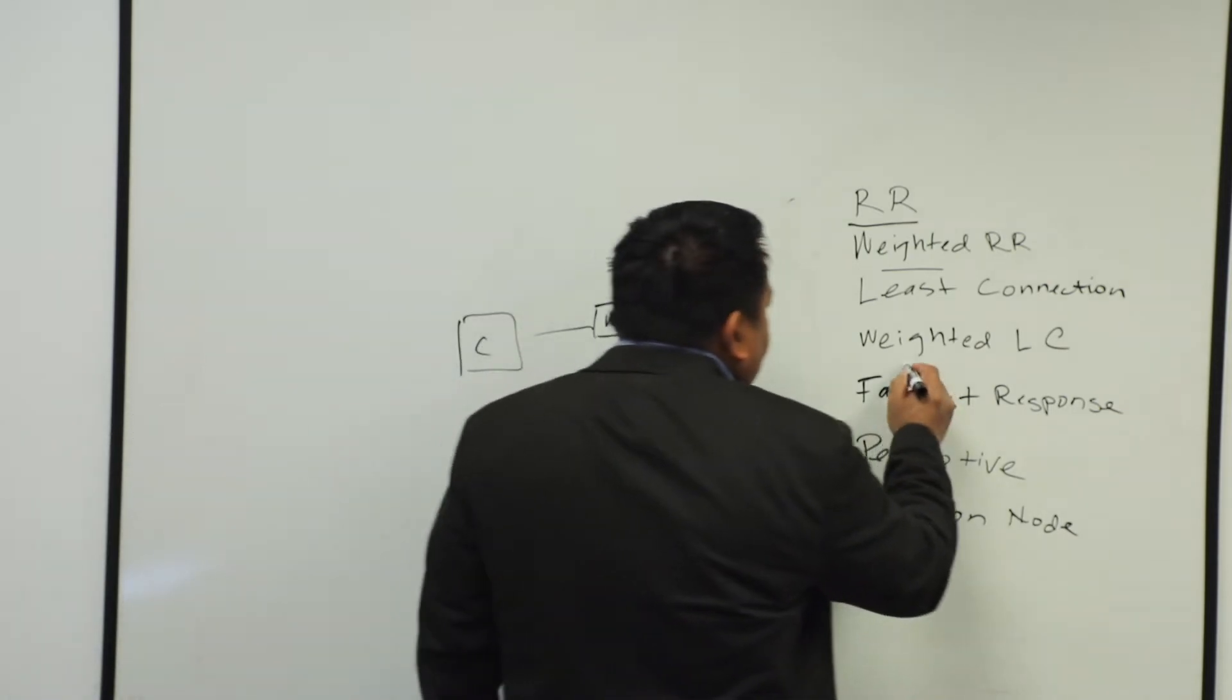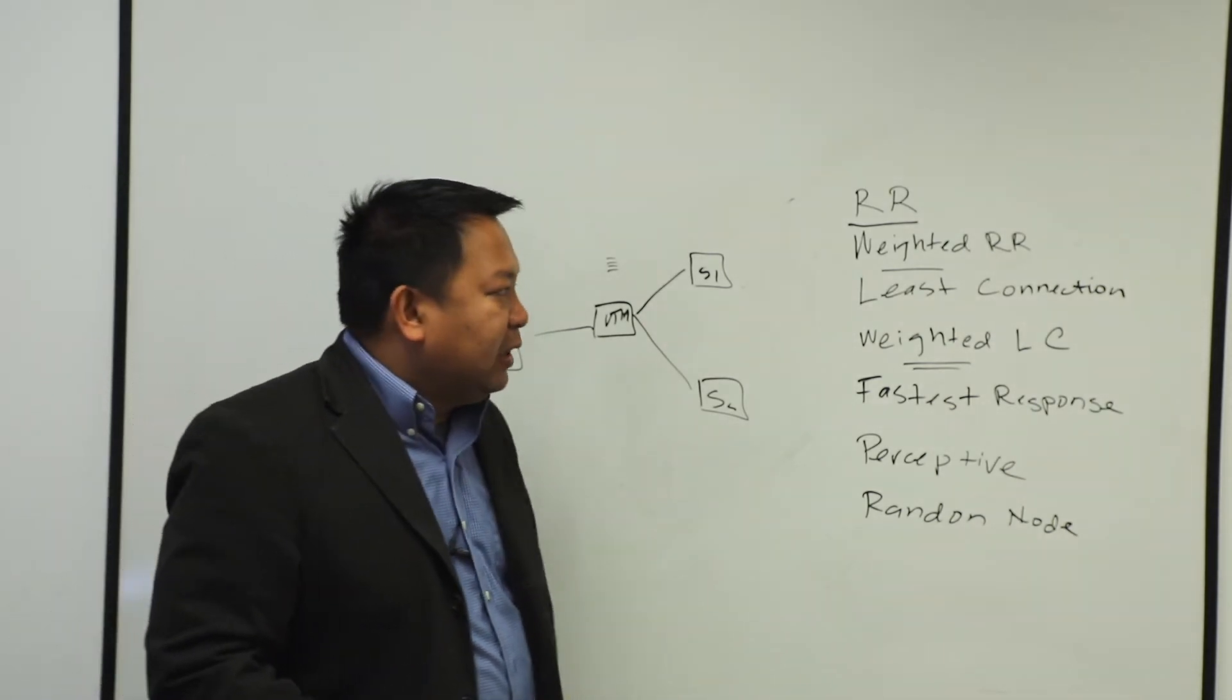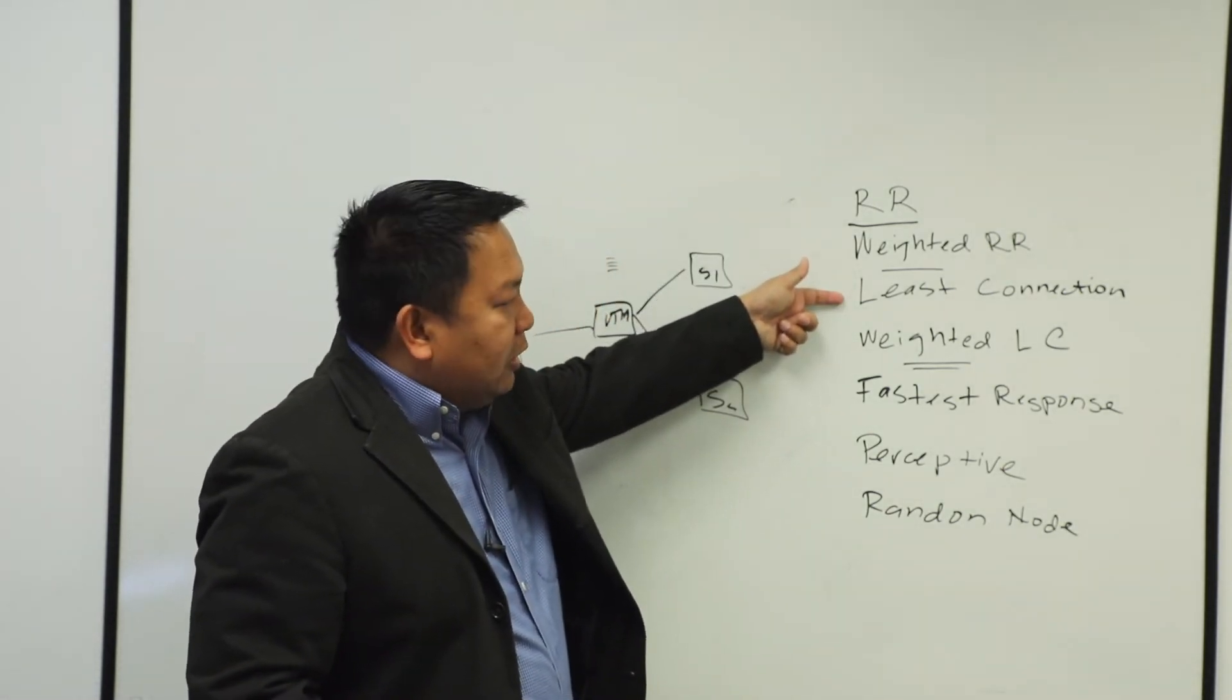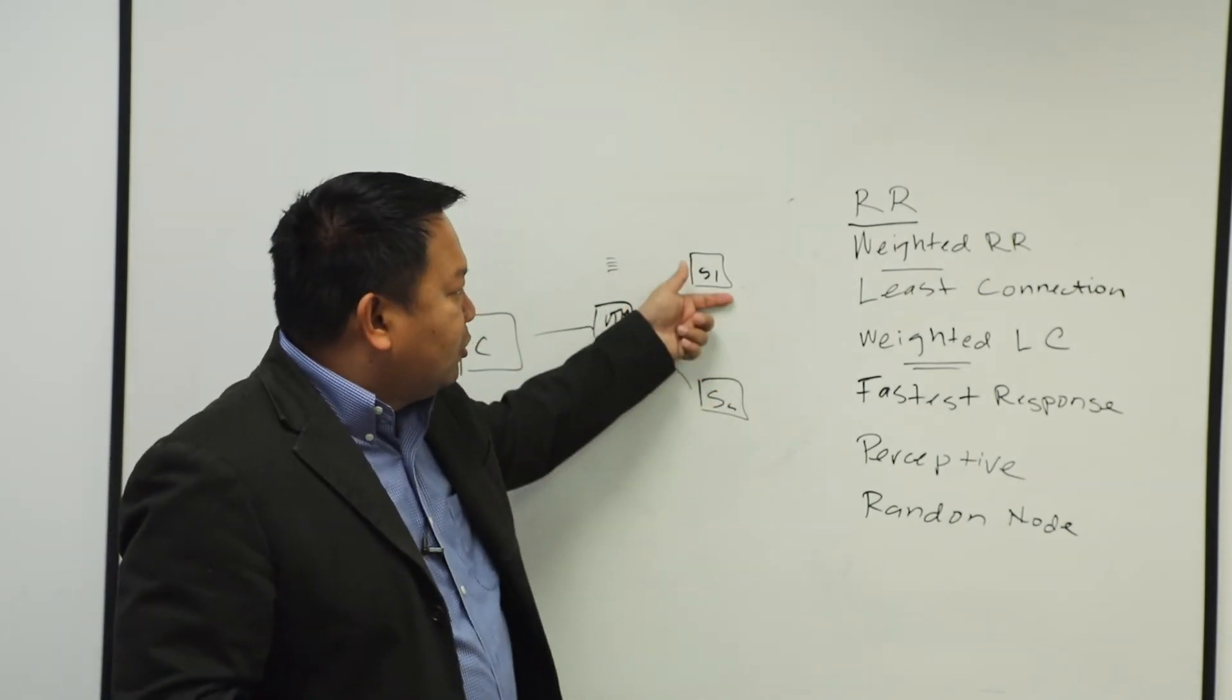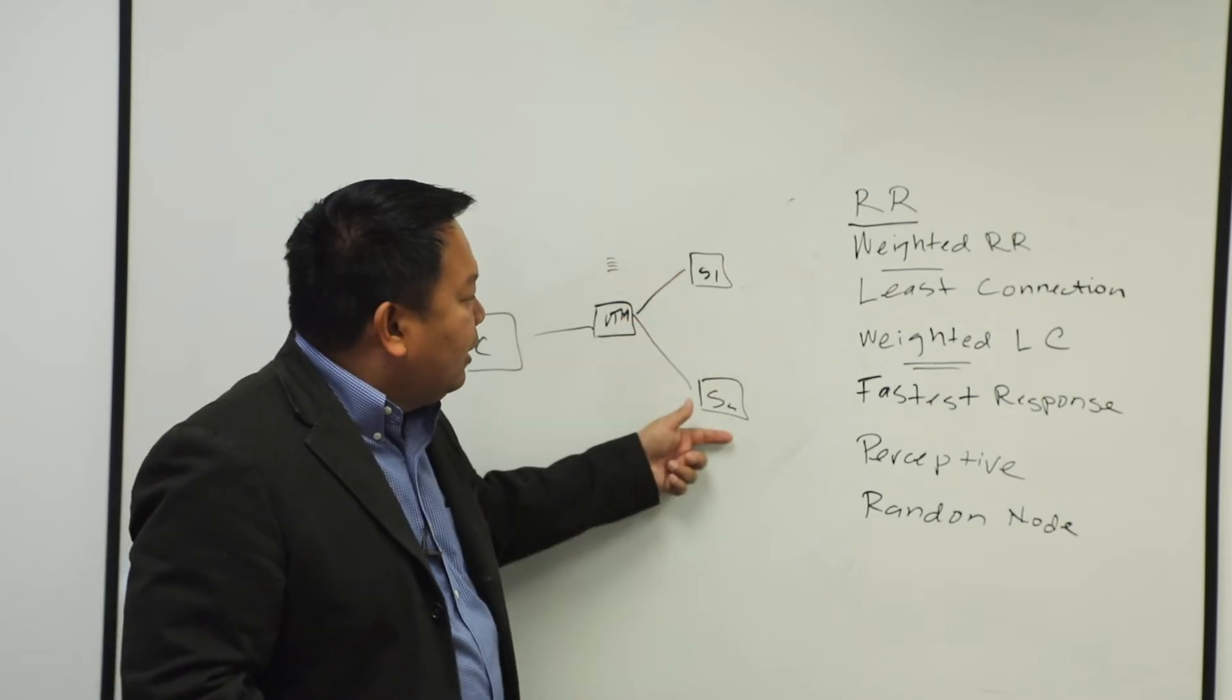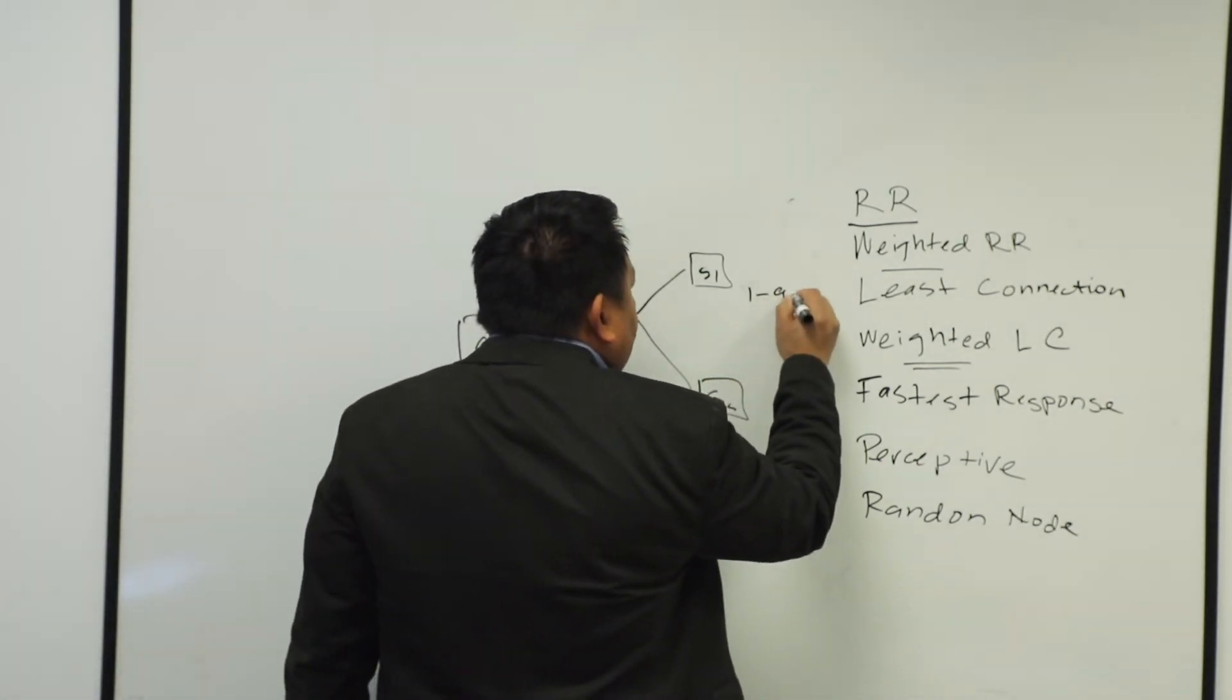Now, again, we have a refinement of least connection, which is called weighted least connection. Very similar to the round robin, but this one with the least connection, it considers and it gathers the information from the current state of the servers. How many requests are they accepting from server one and server two? And again, we also have the weighted 1 to 99.